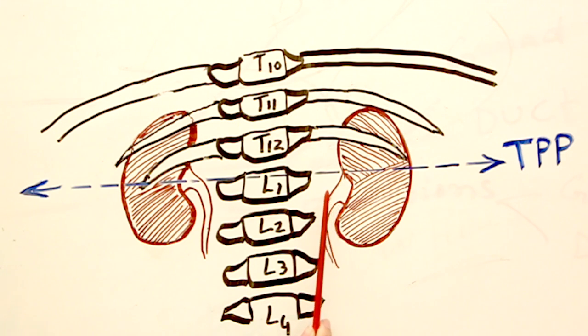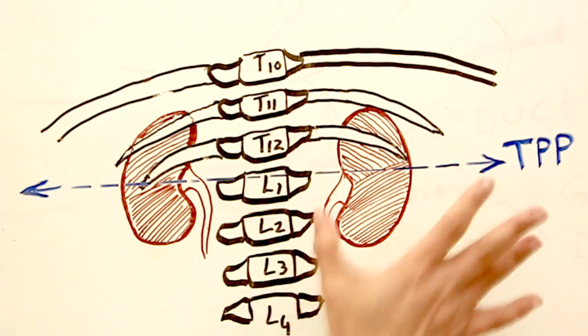If you look at the hila of both kidneys, the hilum of the right kidney is slightly lower than the level of the transpyloric plane. The transpyloric plane is running over L1, the first lumbar vertebra. The hilum of the right kidney is slightly below the transpyloric plane, while the hilum of the left kidney is at the level of the transpyloric plane. Many other abdominal viscera will be described in relation to this plane.